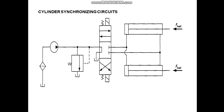Synchronization means we have to operate two or multiple cylinders in a synchronous manner. Synchronization is achieved by keeping the velocities of all connected cylinders the same. Extension of all cylinders must start at the same point, all cylinders will extend at the same time, and all cylinders will retract at the same time. That is what is called a synchronization circuit.